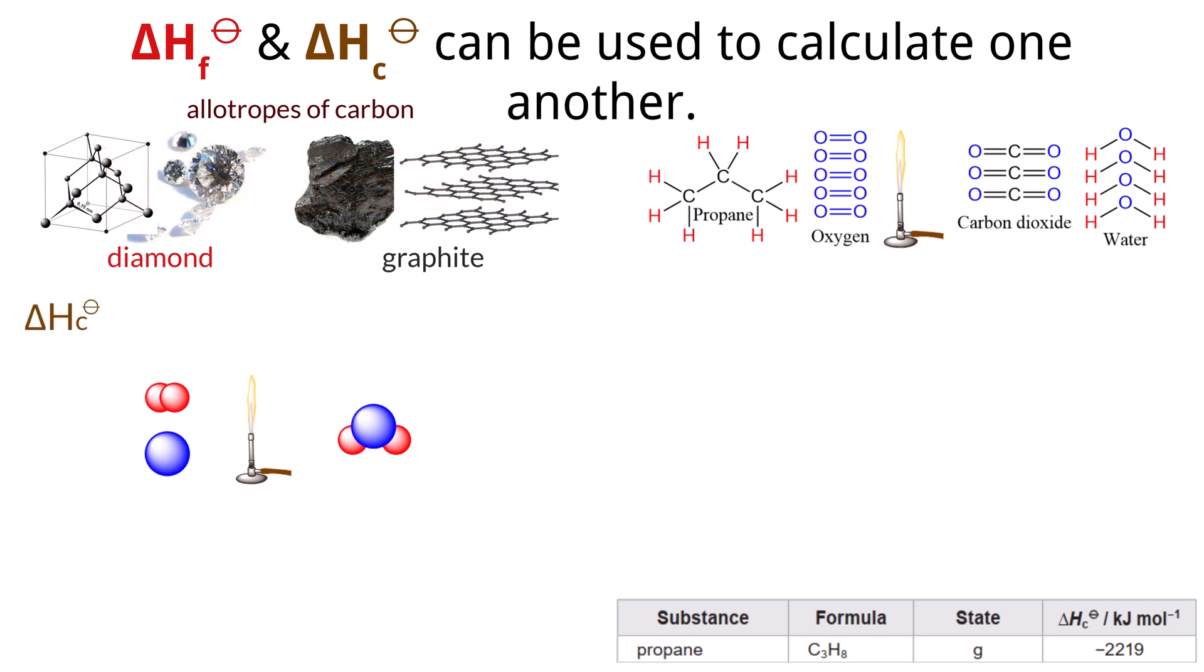That is exactly the case with the allotropes of graphite and diamond. The standard enthalpy change of combustion, delta H sub C naught, for diamond is less negative, less exothermic than graphite, indicating that more energy is required to combust diamond. This is due to the additional energy needed to break the stronger bonds in the diamond structure.